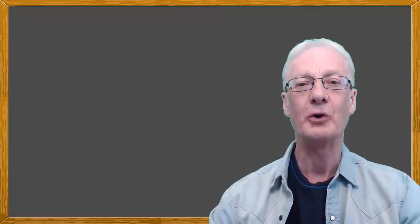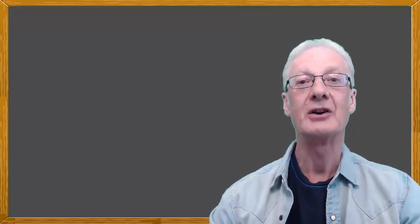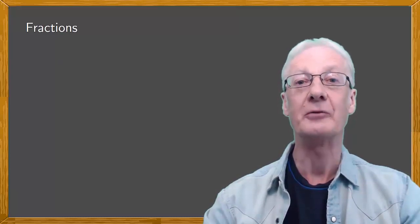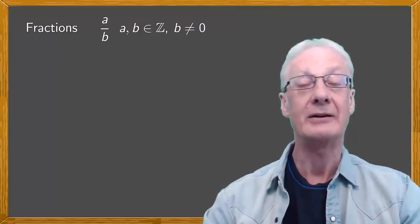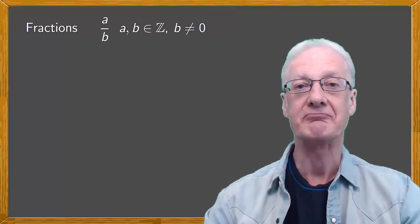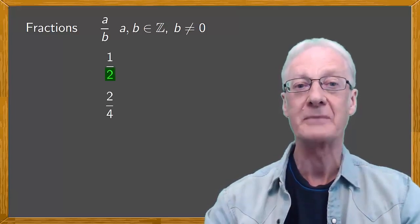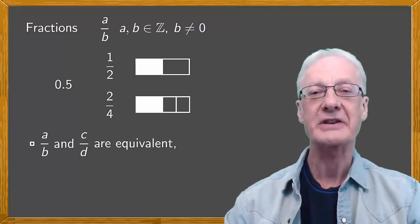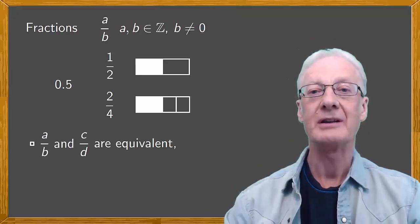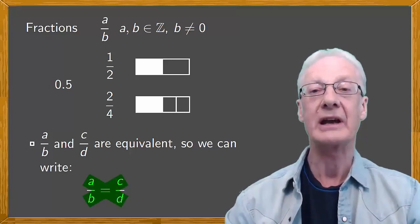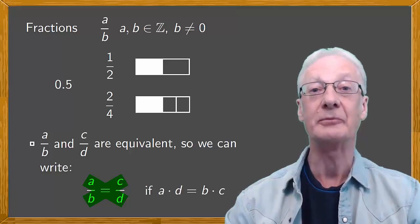To warm up we'll first work with a set of numbers that we're all familiar with: fractions. As you know a fraction is a pair of numbers expressed in the form A over B where A and B are any integers except that B can't be zero. You also know that some fractions such as a half and two quarters are the same. In this case both have the decimal value 0.5. If fractions A over B and C over D are equivalent then we can write that A over B equals C over D and when we cross multiply we get the result that A times D equals B times C.